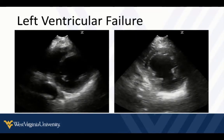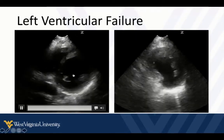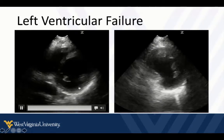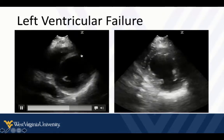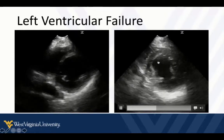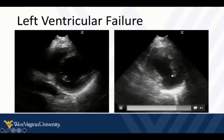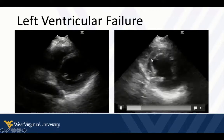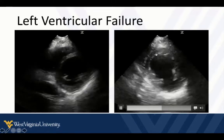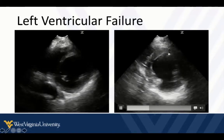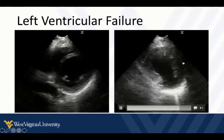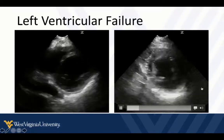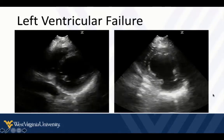Here are some short axis views where we can see the endocardial borders pretty well, and there's really just not much volume changing and not much thickening going on. Similarly, the volume is not changing much here. We do have some regional wall motion abnormalities — pretty good thickening up in the anterior septal wall, but this posterior lateral wall just really isn't doing much at all. These are people with failing left ventricles.